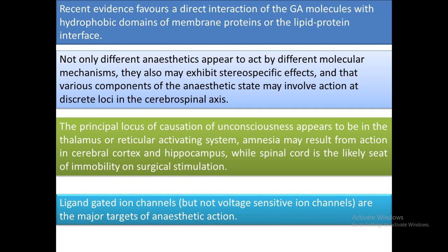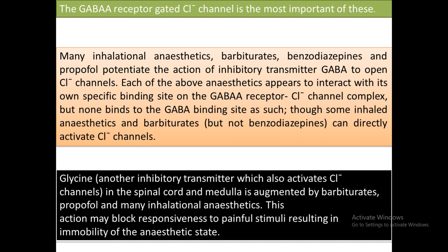Ligand-gated ion channels, not voltage-sensitive ion channels, are the major target for anesthetic action. GABA is an inhibitory neurotransmitter. The GABA-A receptor, which mediates opening of the chloride channel, is most important for general anesthetic action. Many inhalation anesthetics, barbiturates, benzodiazepines, and propofol potentiate the action of the inhibitory transmitter GABA.